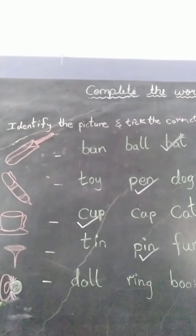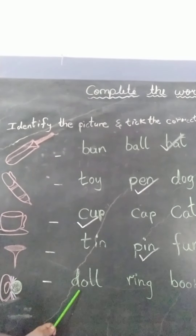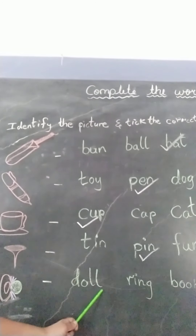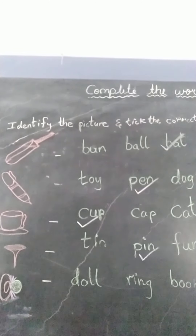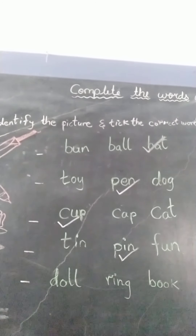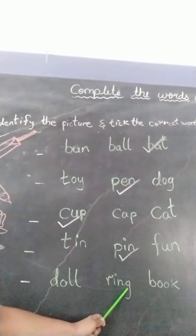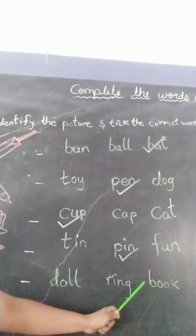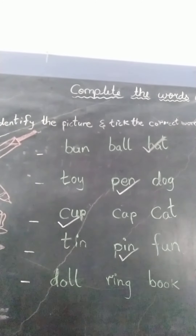Next picture is the picture of a ring. So let us see the words. D-O-L-L, doll. Next word is R-I-N-G, ring. Next word is B-O-O-K, book.